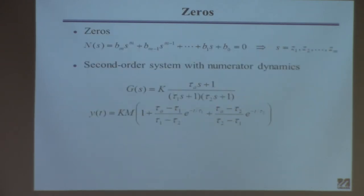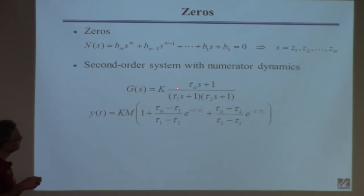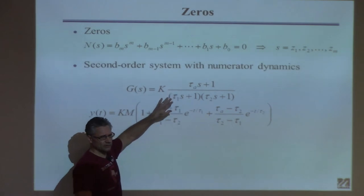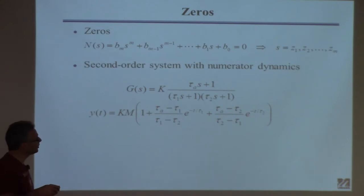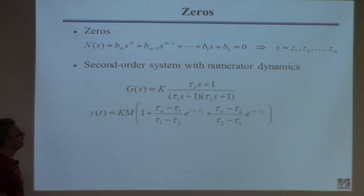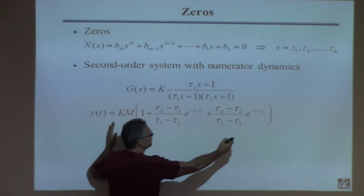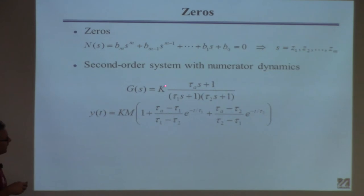Now I'll talk about the numerator. You take the numerator polynomial, set it equal to zero, and find its roots — those are called the zeros. If it's an M-order polynomial, there'll be M of them. To give you some idea of what zeros can do: consider a second-order overdamped system with this in the numerator — tau_a·s plus 1 — instead of just being one. I computed the response to a step change by multiplying by M over s and finding the inverse Laplace transform, which is in the table. The answer involves this expression, subsequently multiplied by K and M as usual.